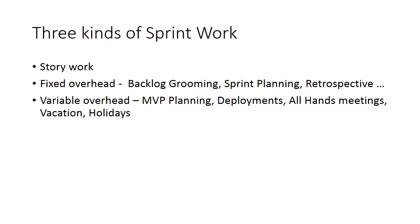There are three different types of work performed in a sprint. Story work, which can include user stories, architecture stories, technical debt, and so on. There is also fixed overhead, which is work that happens on a consistent basis across sprints. This may include things like backlog grooming, sprint planning, retrospectives, and so on.